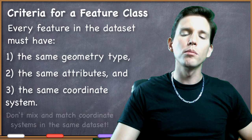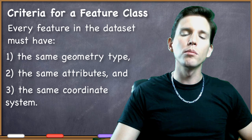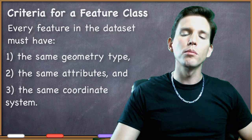So that's what a feature class is in the broad sense, conforming to these three standards: the same geometry for every feature in the file, the same attribute information for every feature in the file, and using the same coordinate system to collect all the geometry for every feature in the file. Whenever you create vector GIS datasets, this is your best practice for GIS data collection, creation, and management.